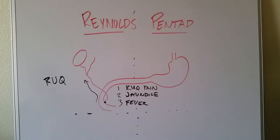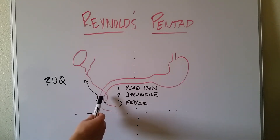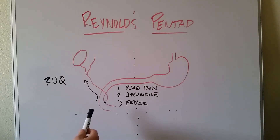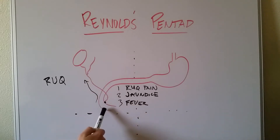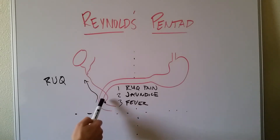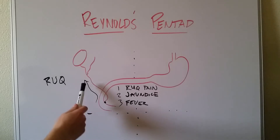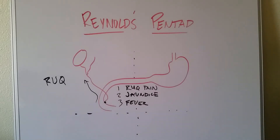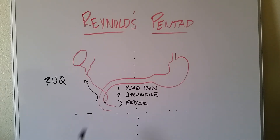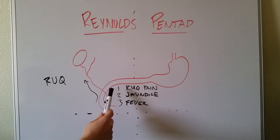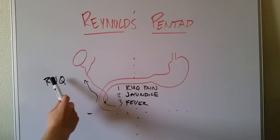Charcot's triad, or ascending cholangitis, can be seen when you have stasis in the common bile duct, usually caused by a gallstone, and that predisposes you to an ascending infection from the duodenum. The bacteria are going to infect that static bile and start making their way up the bile duct, and you're going to see some classic signs and symptoms. The first being right upper quadrant pain, because of the part of the body that we're dealing with.